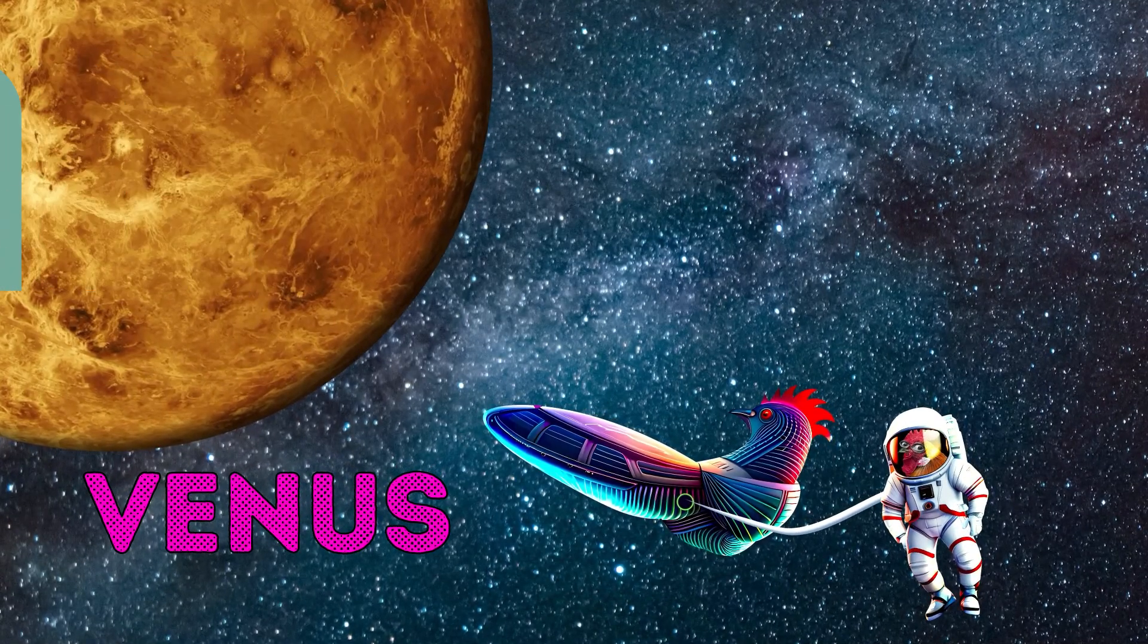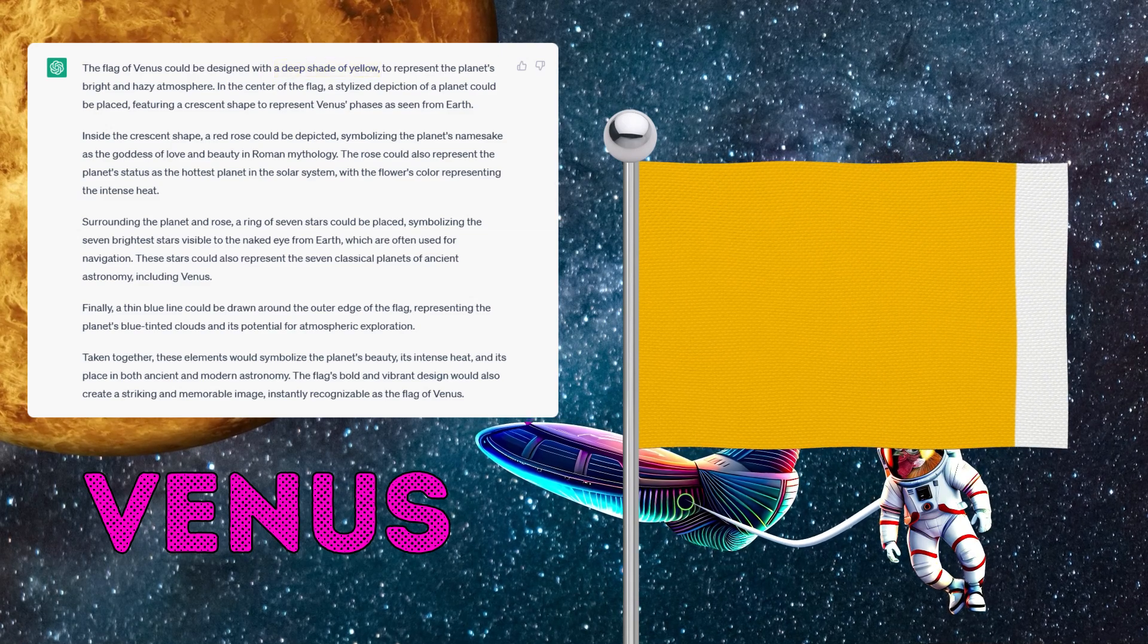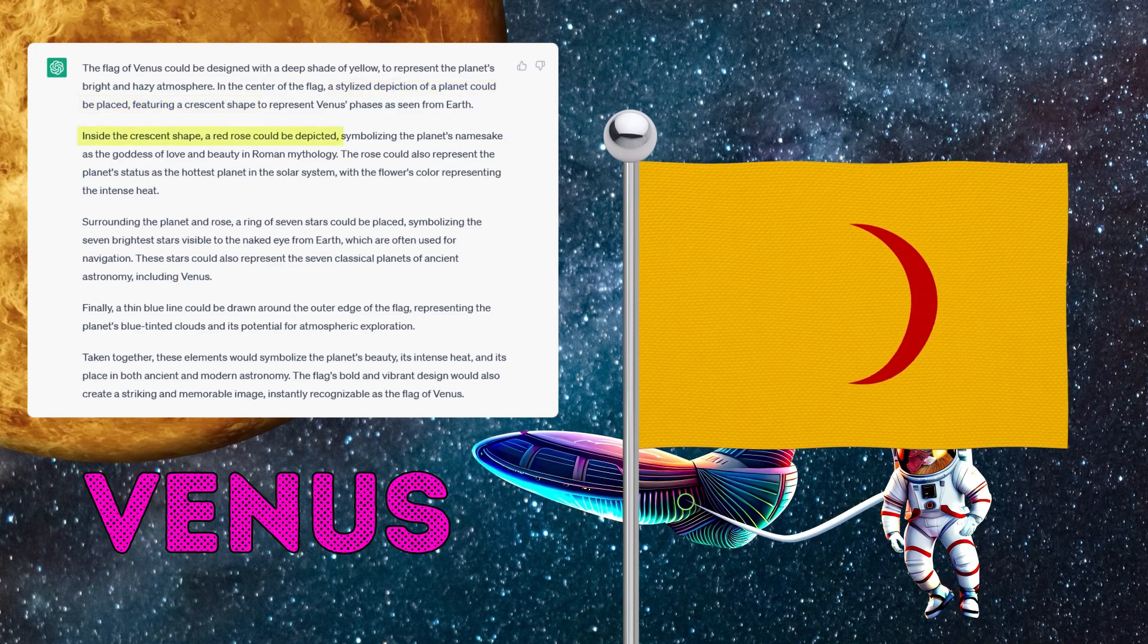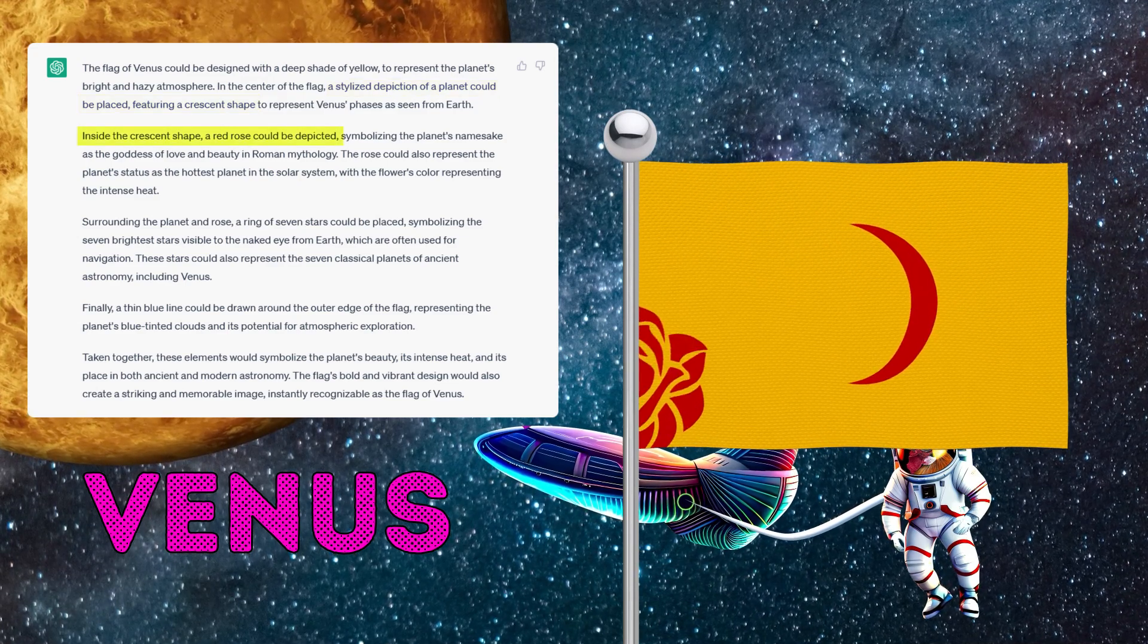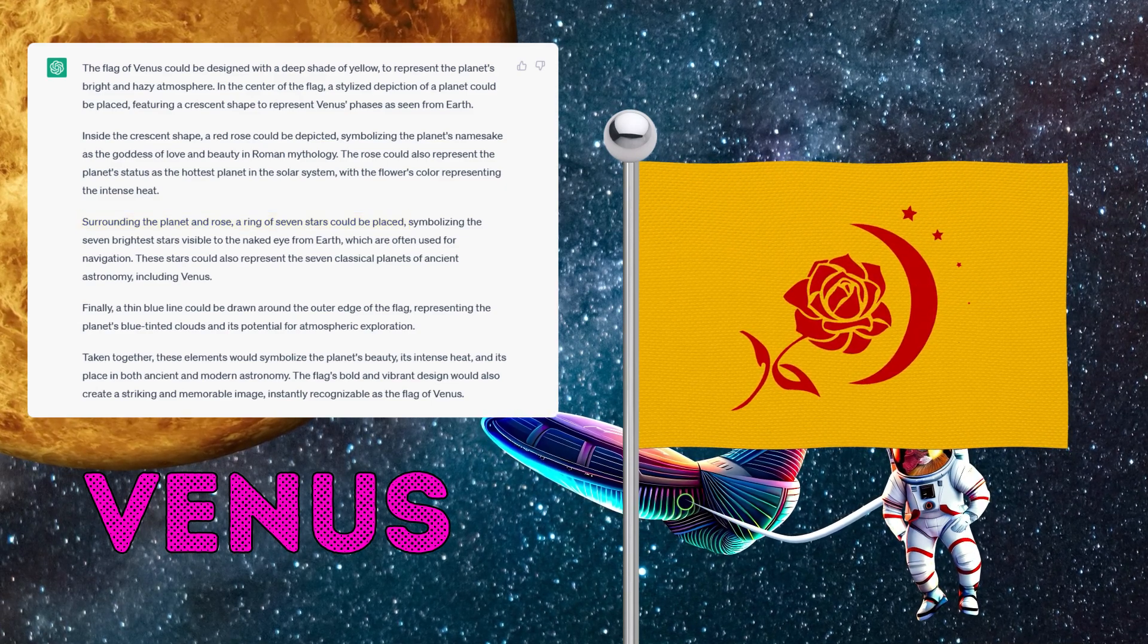What might the Venus flag look like? As a background color, we will use a rich yellow. In the center, we will place a stylized image of the planet in a crescent shape. Inside the crescent, we will place an image of a rose. Around the planet, we will draw seven stars. And we will paint the borders of the flag in blue.